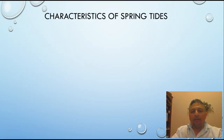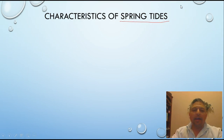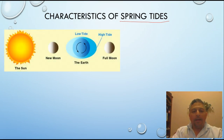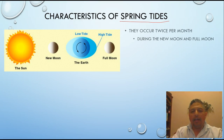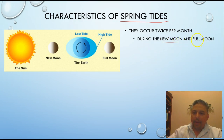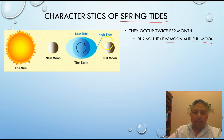Let's look at characteristics of spring tides. It's not because it's spring or spring break — that's not the reason. Here is a picture of what a spring tide looks like. They occur twice per month, especially during the new moon and the full moon. Here is the new moon — one example of when we have a spring tide — and also during the full moon.